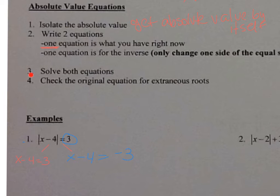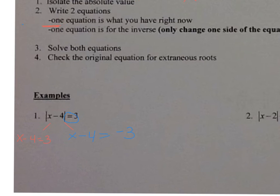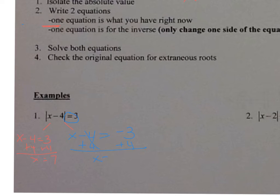Step three is to solve both equations. On the left equation, I add four to both sides: x equals seven. On the right equation, I add four to both sides: x equals negative three plus four, which is positive one.